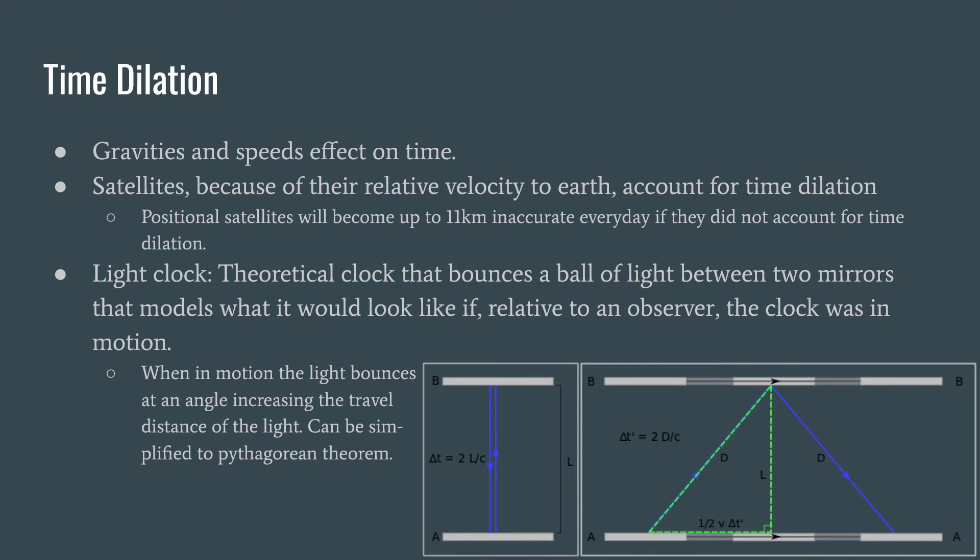And then to kind of explain time dilation a little bit, we're going to look at the light clock. Now imagine a light clock as two mirrors and between those two mirrors is a singular ball of light. And each time that ball of light hits the bottom mirror, it reflects back to the top mirror and so on and so forth forever. Now stationary, it looks like the first picture on the left where it's just bouncing up and down in a straight line. And let's call that a second, right? Every second that happens, tick tock, tick tock every second.